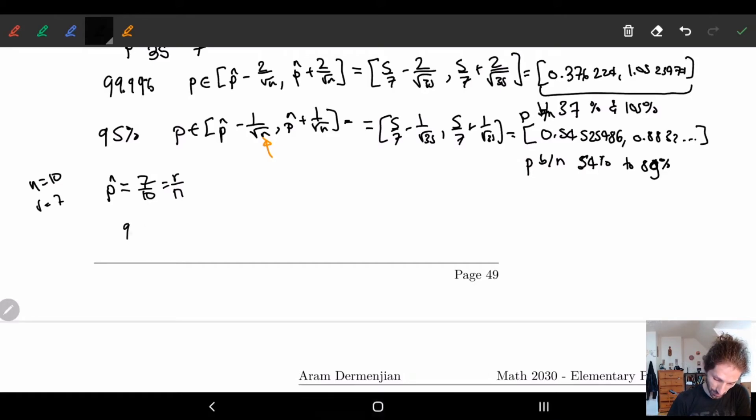So 99%, 99.9%. So we do the same thing. So we end up getting 7 tenths minus 2 over square root of 10 and 7 tenths plus 2 over square root of 10.